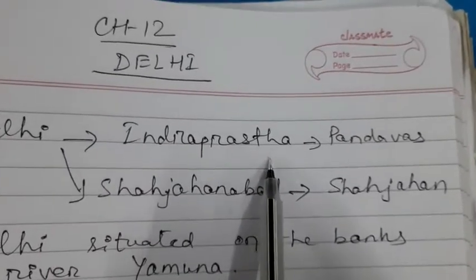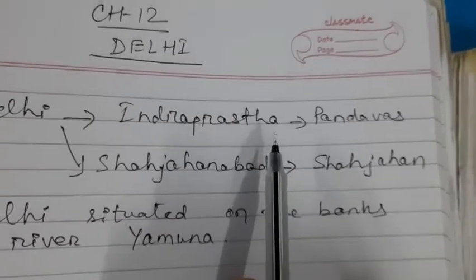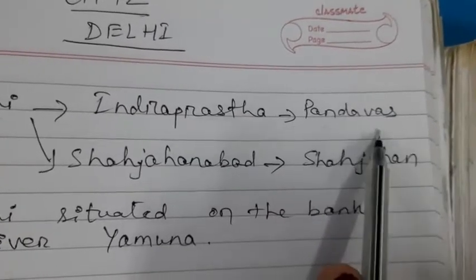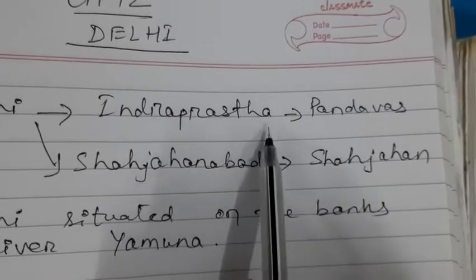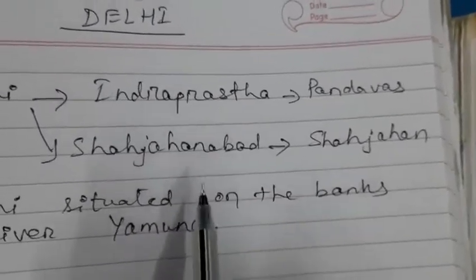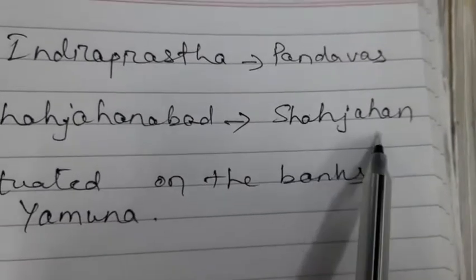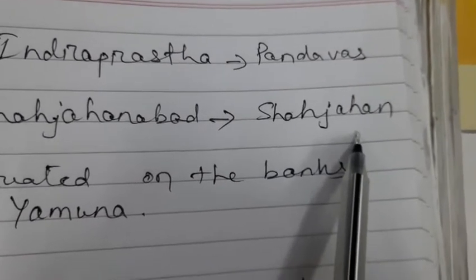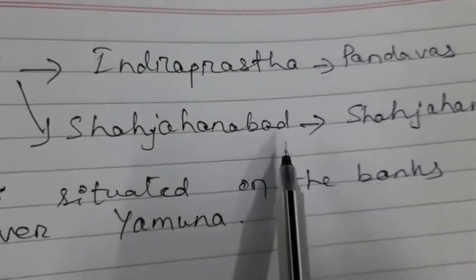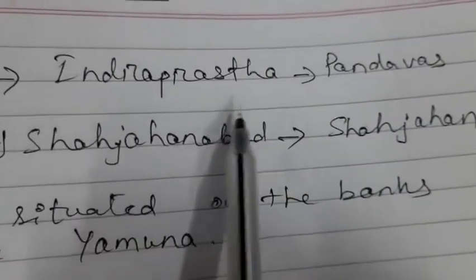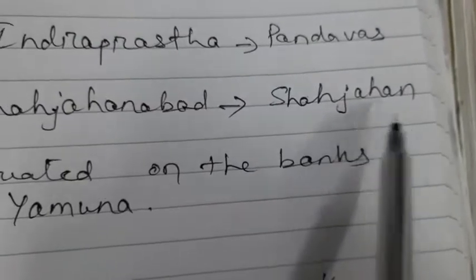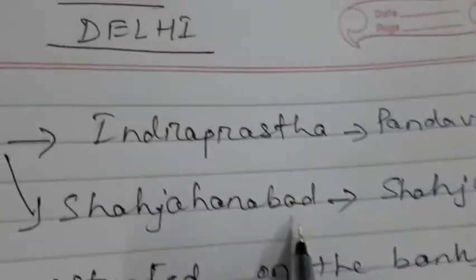The former name of Delhi was Indra Prastha. You have heard about the Pandavas and Kauravas in the Mahabharata. The Pandavas created the city called Indra Prastha, which later became known as Delhi. During the Mughal period, Emperor Shahjahan rebuilt it and called it Shahjahanabad, named after himself.